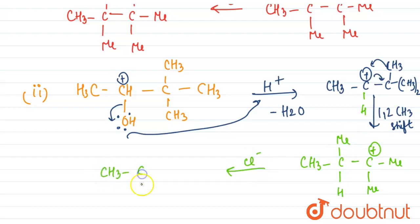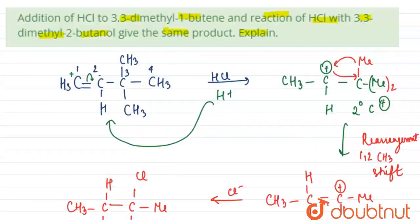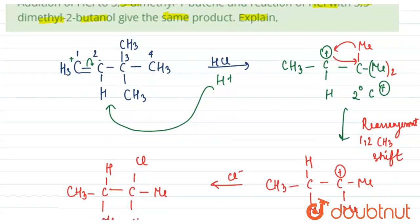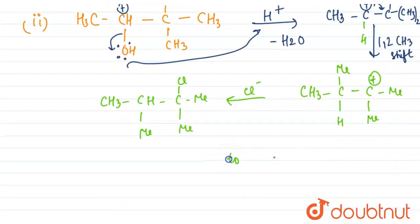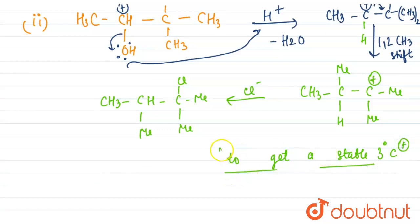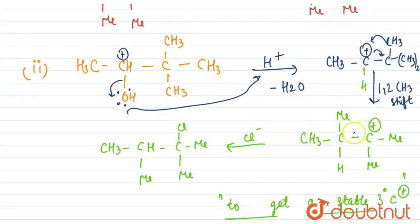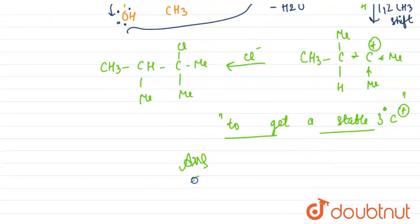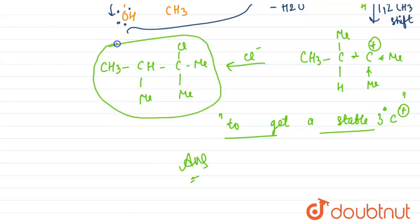Chloride attacks this carbocation and we get the same product as formed from 3,3-dimethyl-1-butene. The product is the same because both reactions undergo a 1,2-methyl shift rearrangement. The reason this rearrangement takes place is to achieve a stable three degree carbocation, as three methyl groups provide a greater +I effect, making the carbocation more stable.